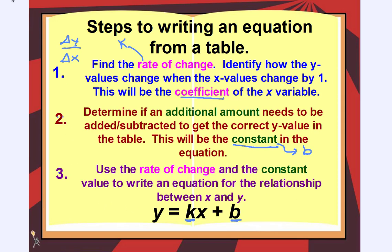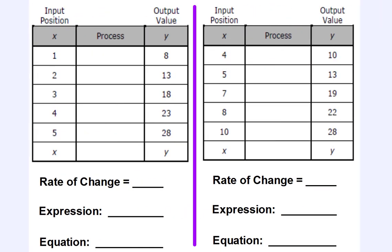If you're confused, don't worry — let's go ahead and do some practice. Our first practice problem: we have a table with the input and the output. This table has a process column to help us show our work. The first thing we're going to do is find the rate of change. Every time you see rate of change, I want you to get in the habit of writing the change in y over the change in x — this is how we're going to find the rate of change.